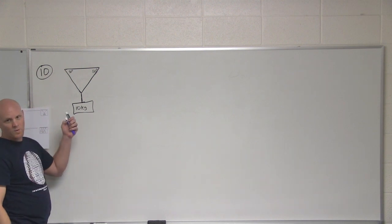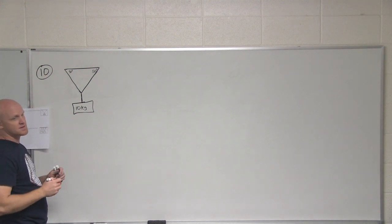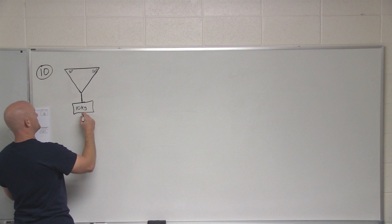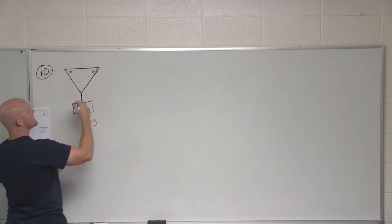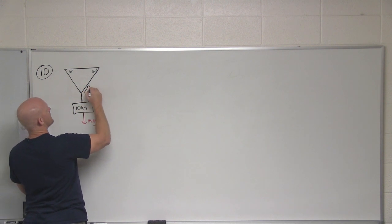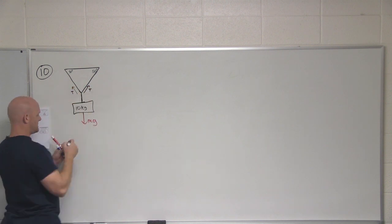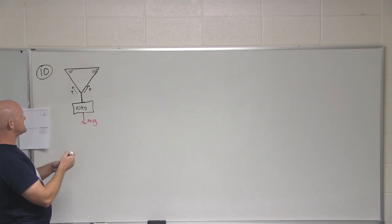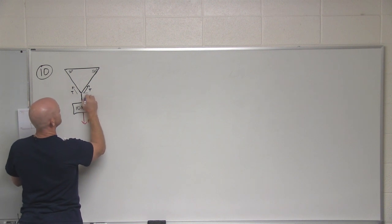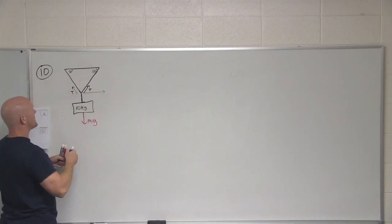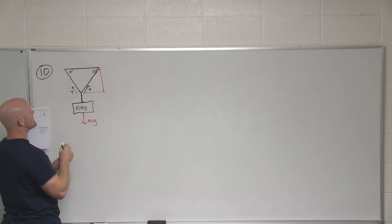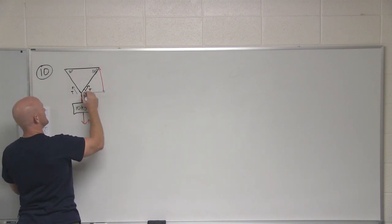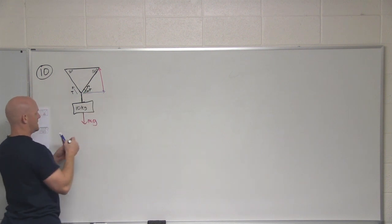So in this case, free body diagram: what forces are acting on this object? Yeah, it's got its own weight. Great. And then, yeah, the tension. And the tension gets a chance to operate on this mass twice, one on each side. And that tension can be broken into components here, so we have an x component and we have a y component. Notice that 50 degrees we see right there is also this angle right here as well.